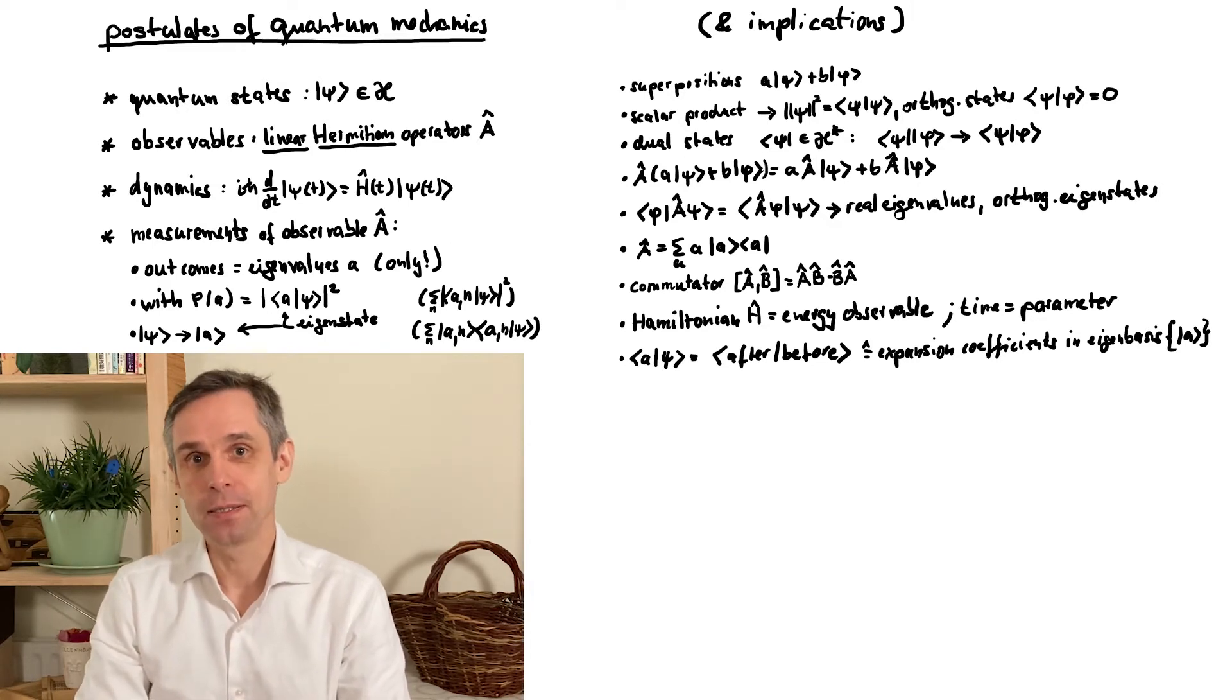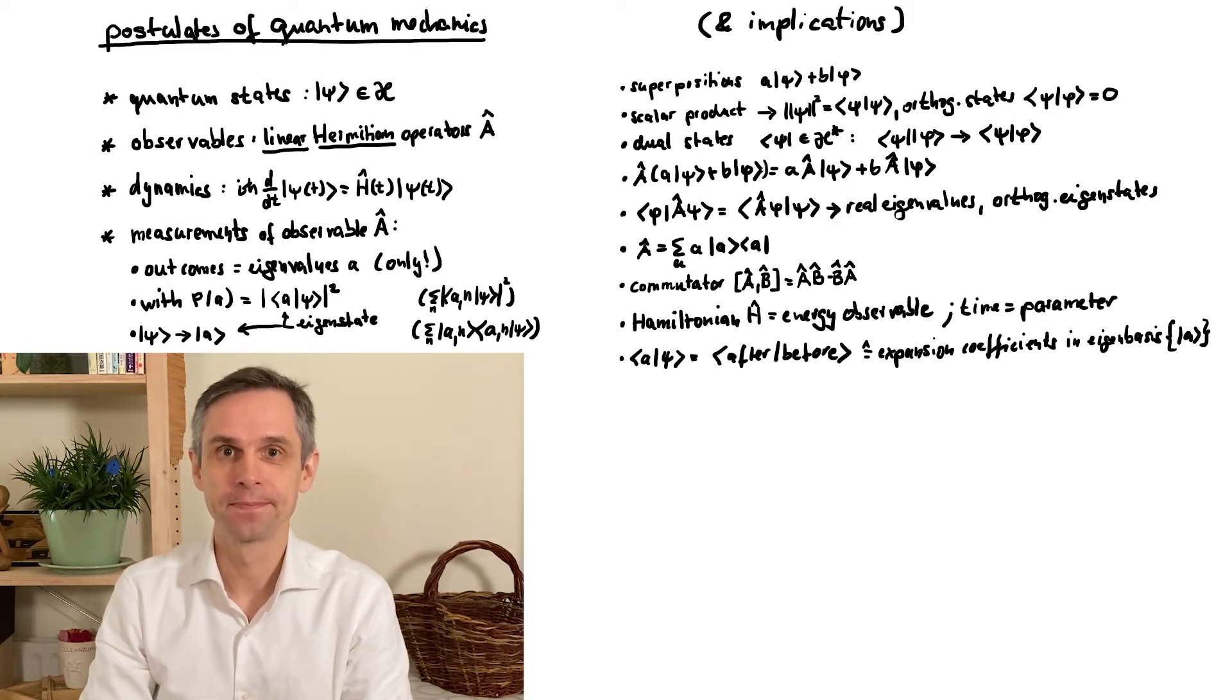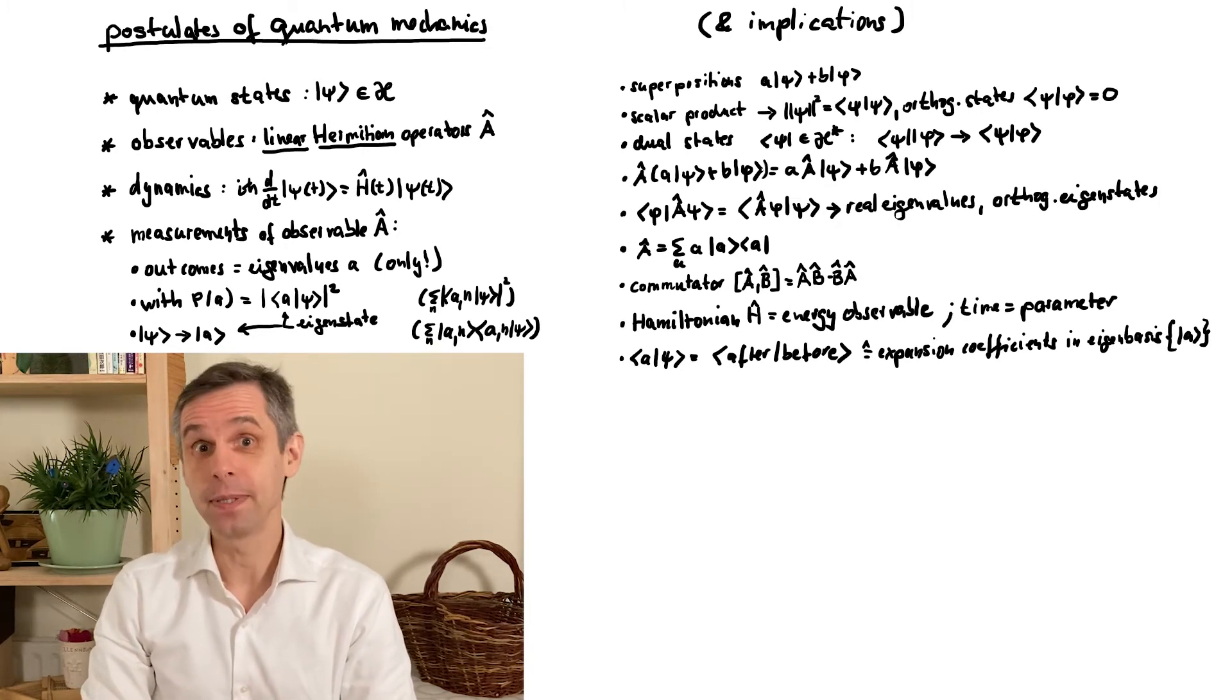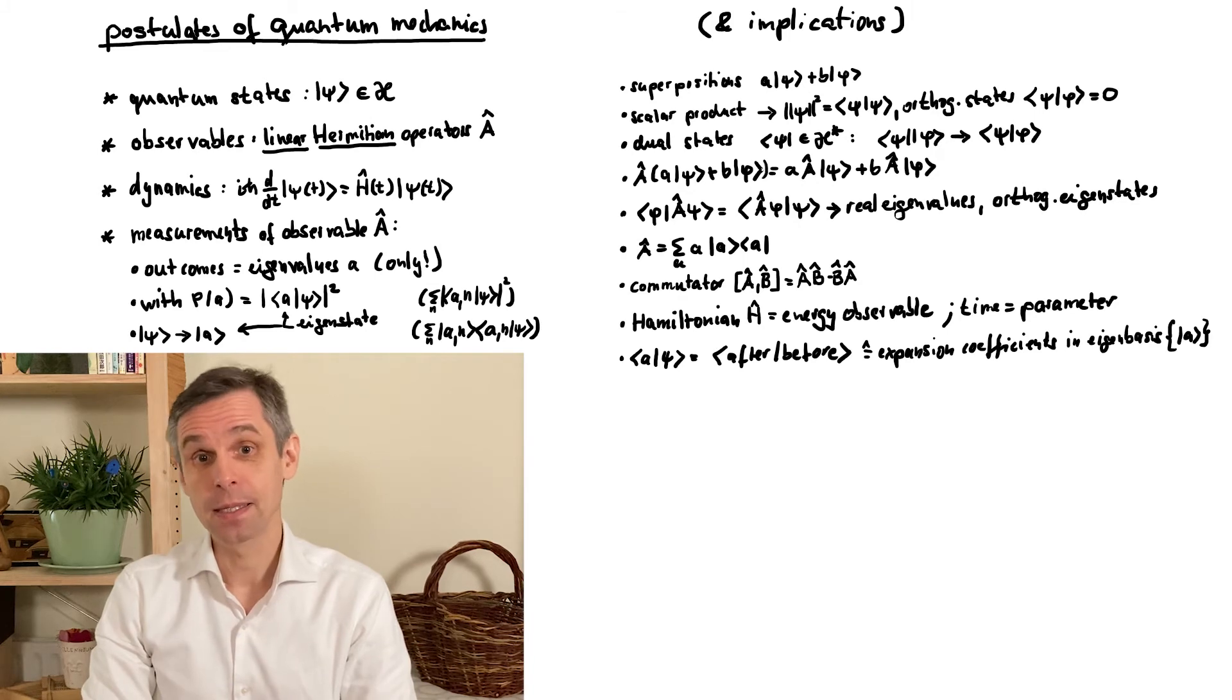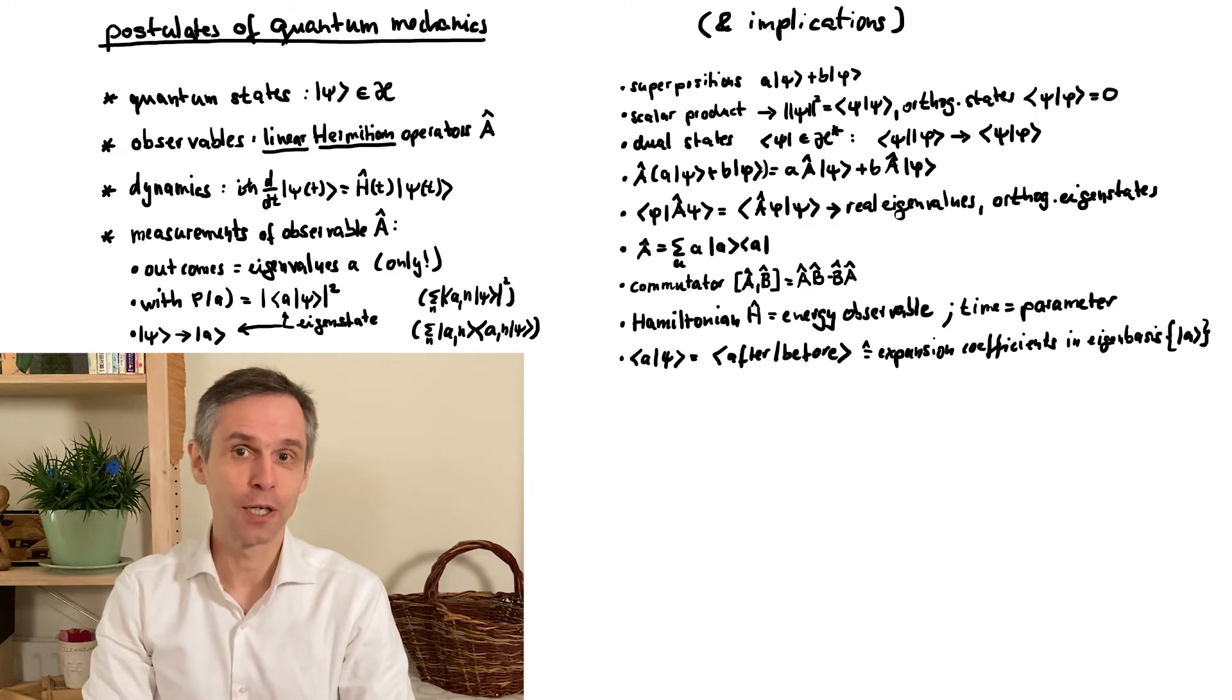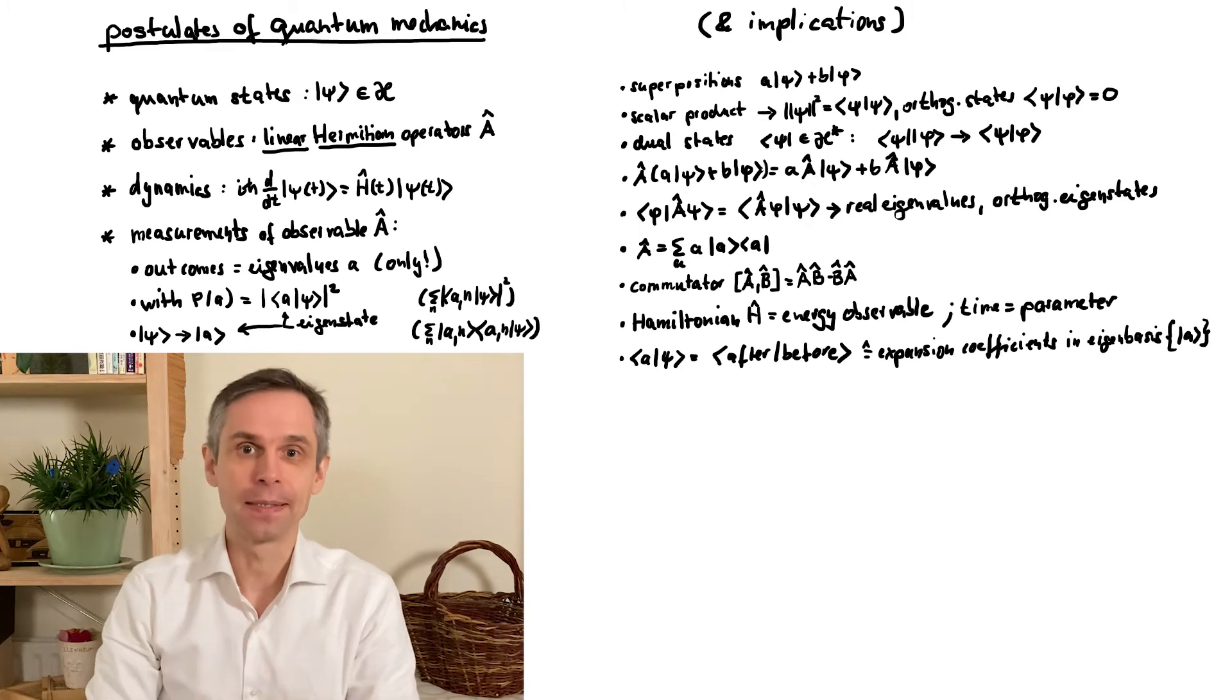This drastic effect of the measurement is also known as the collapse of the wave function. It is really worthwhile to contemplate these points and appreciate their deep nature. This last rule on measurements determines what questions you can really ask about a quantum system and what you can hope to obtain as an answer.